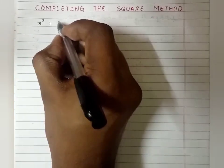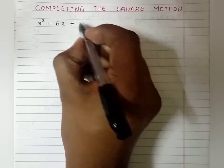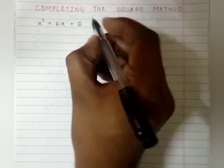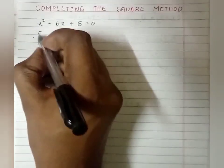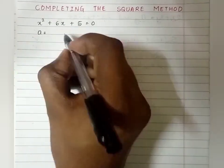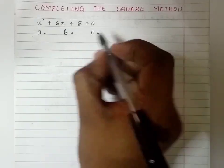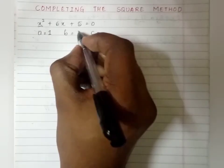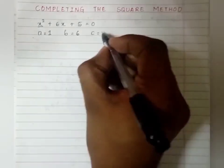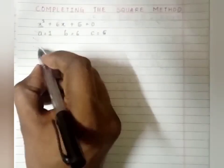The first quadratic equation is x² + 6x + 5 = 0. The first step is finding out the coefficients a, b, and c. So the a value is the coefficient of x², the b value is the coefficient of x, and c is 5.